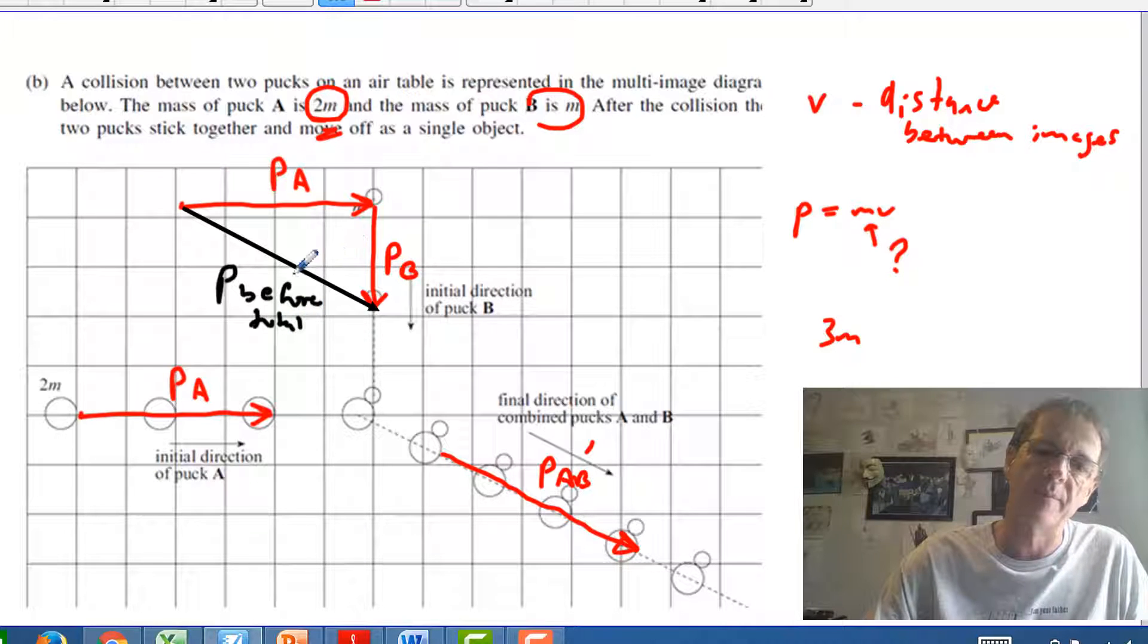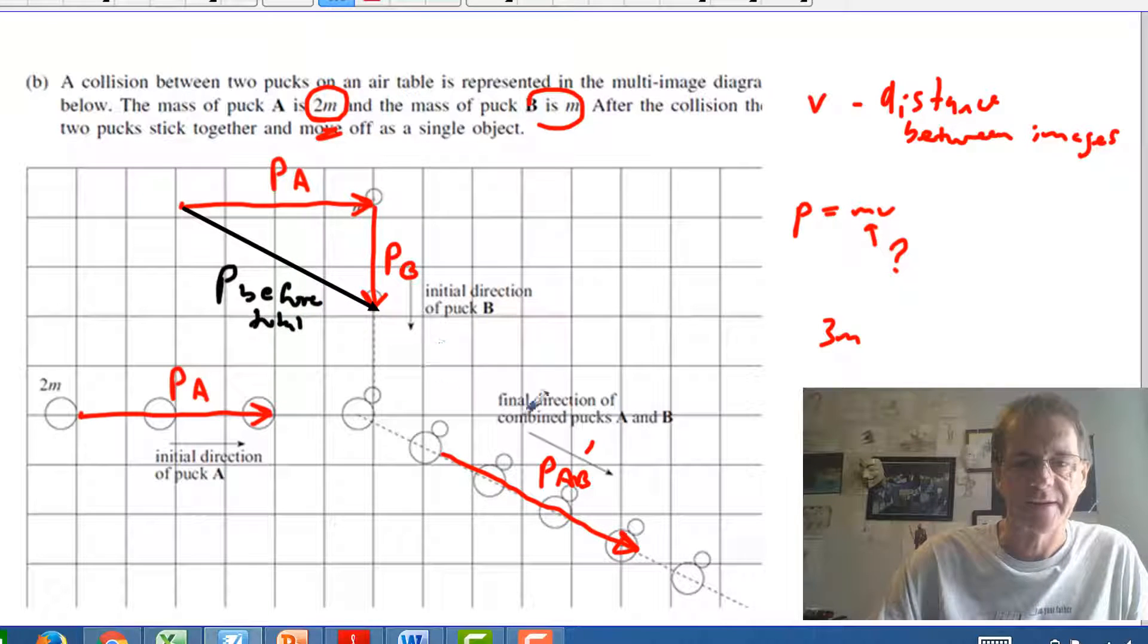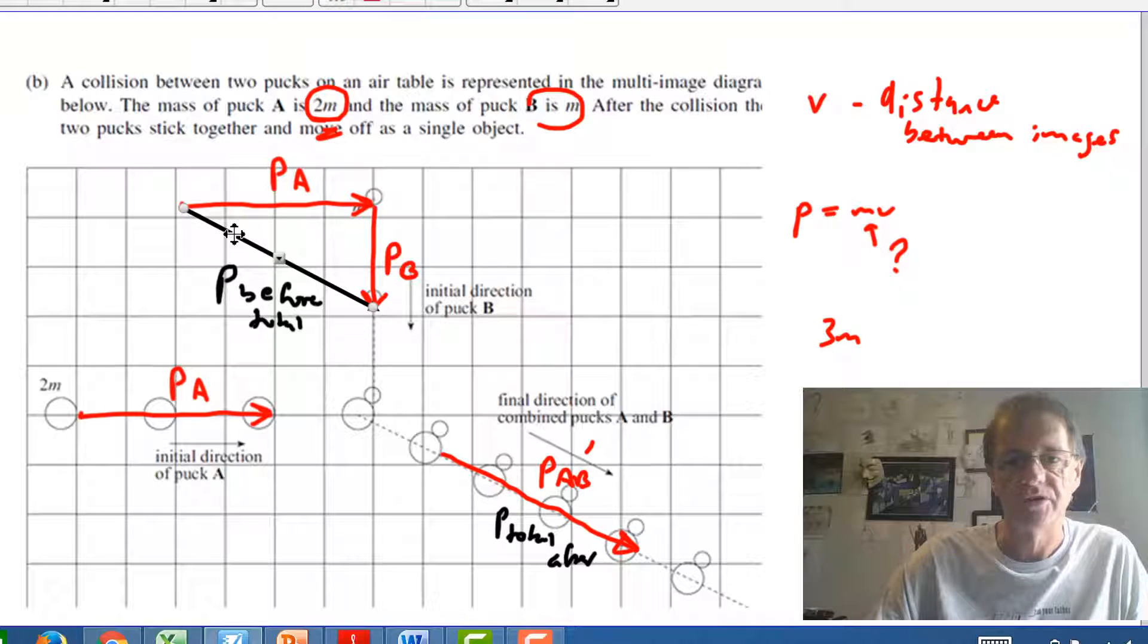To decide whether that momentum is conserved as a total then you need to compare that with this one here and call this P total afterwards now. Because that's the only one that's there. So is that vector there the same as this one? I can just drag this one and see how well it compares.